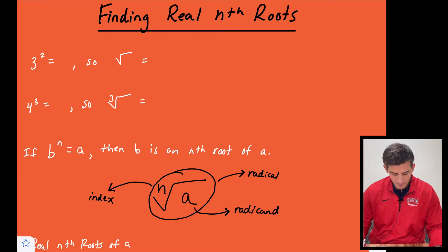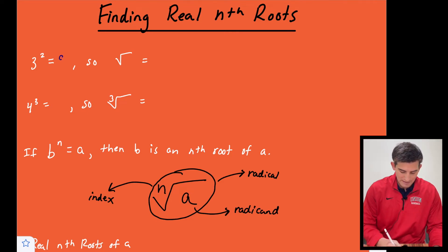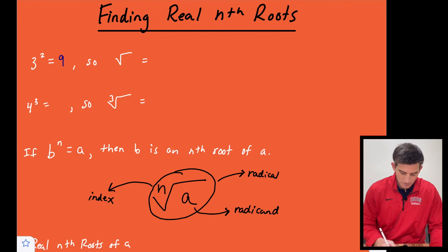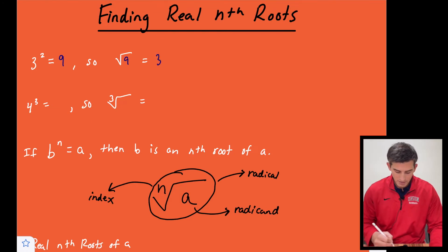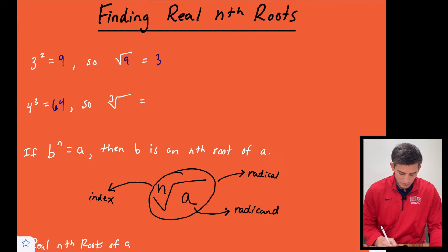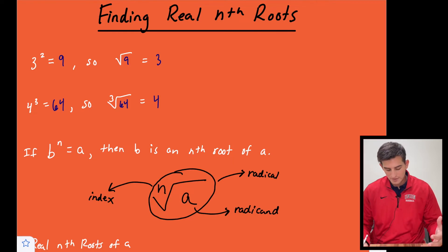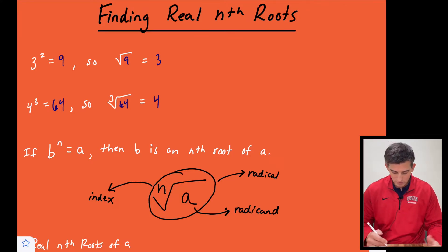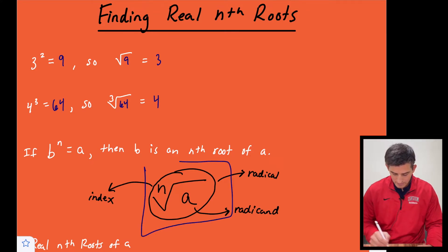Let's start off with three squared. We know that three squared is nine, so if we do the inverse of squaring a number, the square root of nine would be three. We know four cubed is 64, so the cube root of 64 would give us four. So we arrive at this pattern: if b to the n power equals a, then we can write b as the nth root of a.